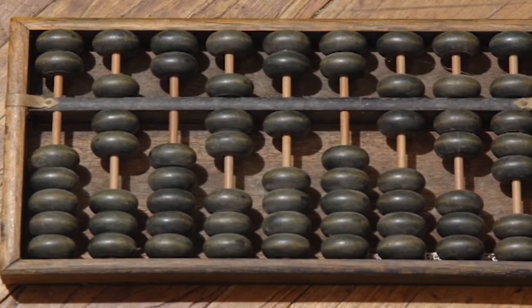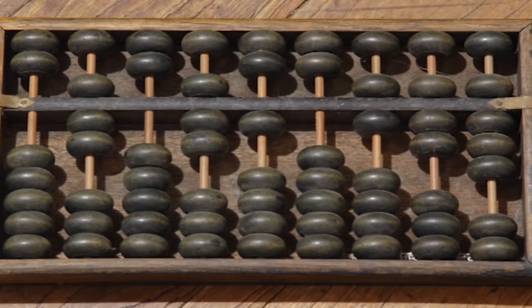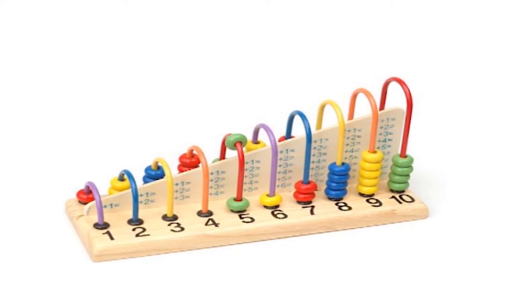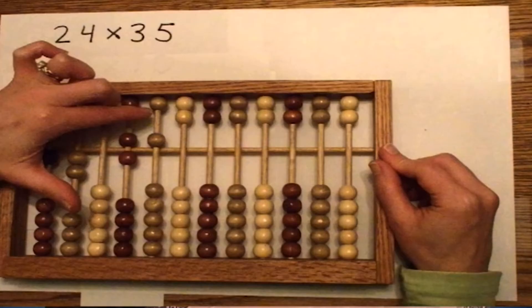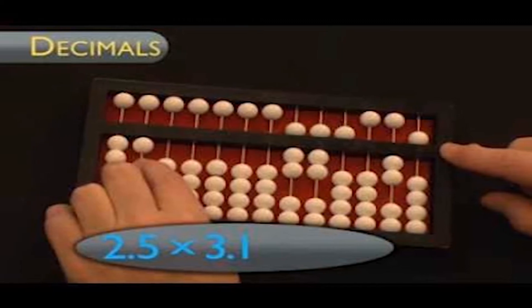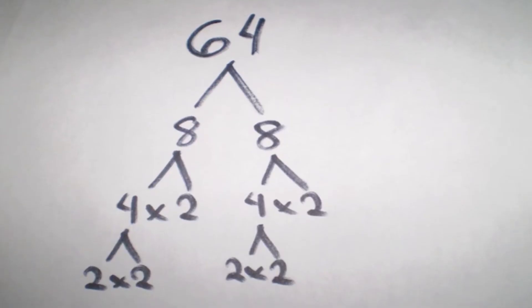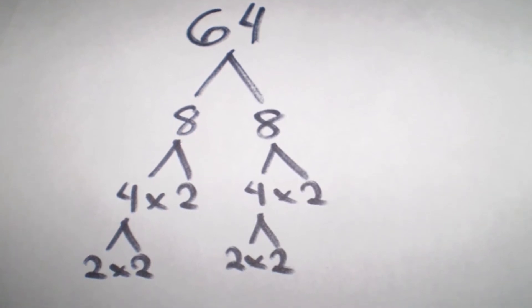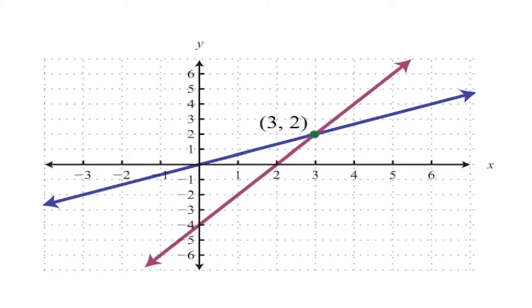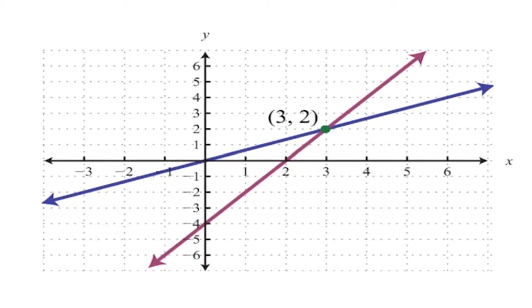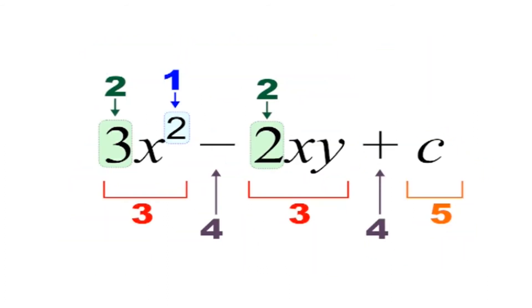Some of the main strengths of the Abacus are: ability to manipulate it very quickly, proper placing of numbers, ability to solve addition, subtraction, multiplication, and division problems, solving problems with many digits even up to 10 digits, solving problems involving fractions or decimals, and solving problems involving square roots and percentages. Some weaknesses: unable to solve problems involving linear equations, geometry, algebra, or trigonometry graphs. The steps in a problem cannot be displayed; only the final answer can be viewed.